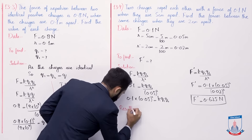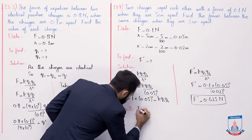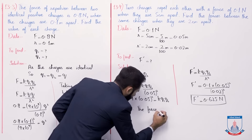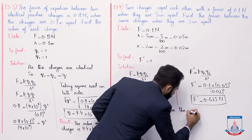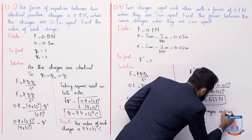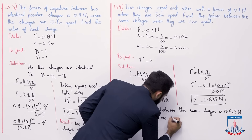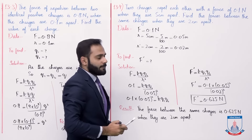So the result is: the force between the two same charges is 0.625 newton when they are 2 cm apart. I hope these four numericals aap samajh gaye. Take care, Allah Hafiz.